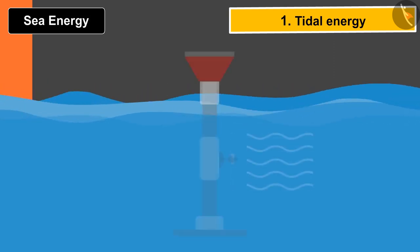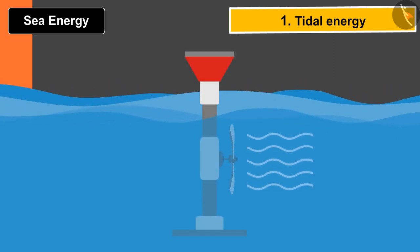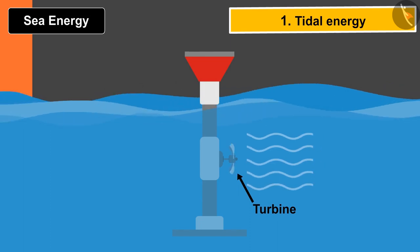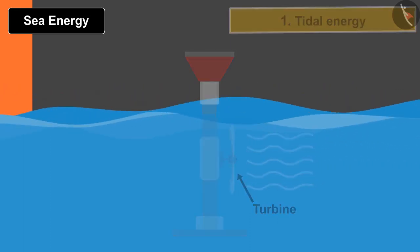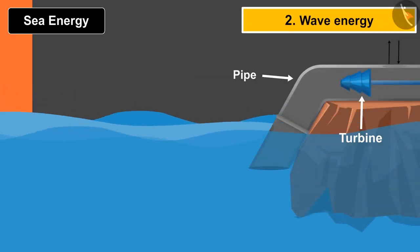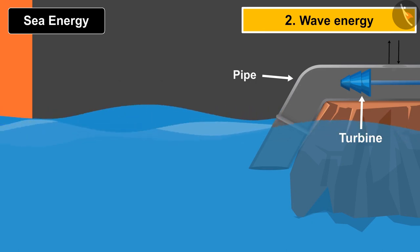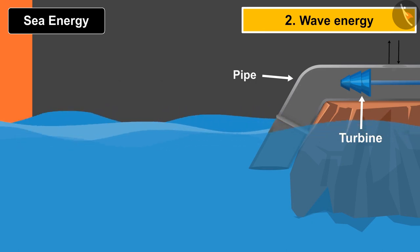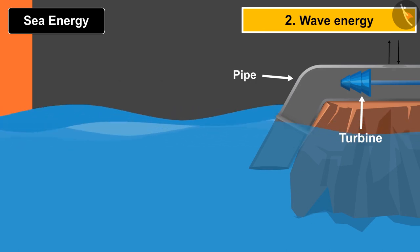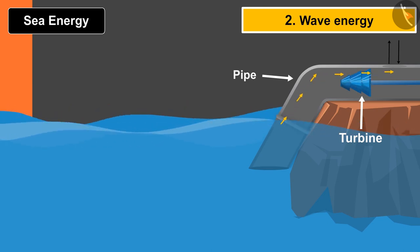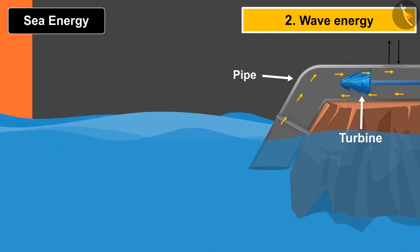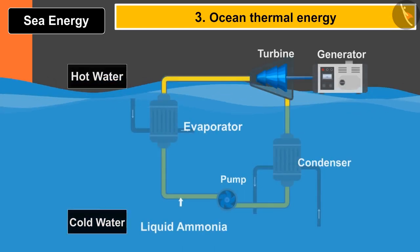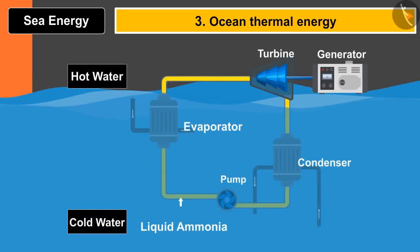In tidal energy, due to high and low tides near the shores of the ocean, a turbine rotates and with the help of a generator electricity can be produced. In wave energy, a huge pipe is placed near the shore of the ocean. Due to the motion of the waves, the air pressure in the pipe increases and decreases, causing the turbine blades to rotate.